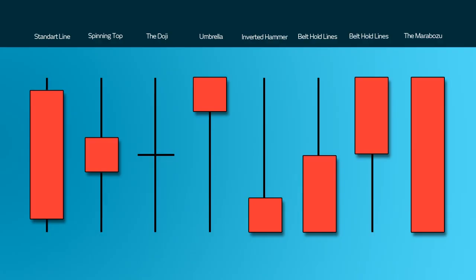Generally speaking, the longer the body is, the more intense the buying or the selling pressure, and conversely, short candlesticks would indicate little price movement and could represent consolidation.